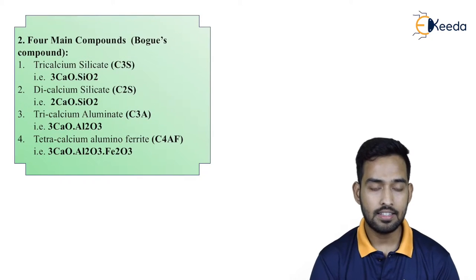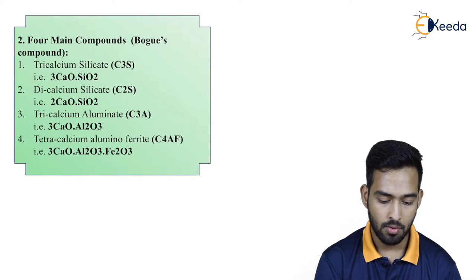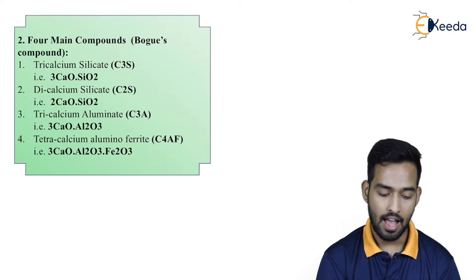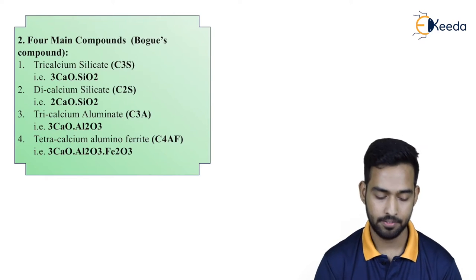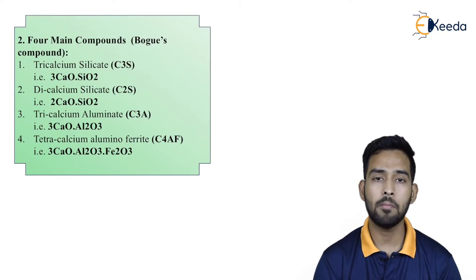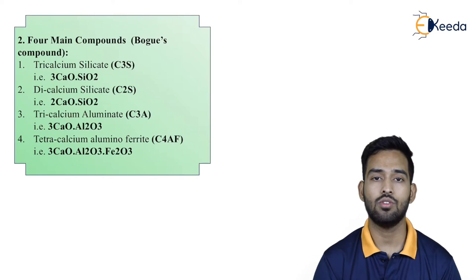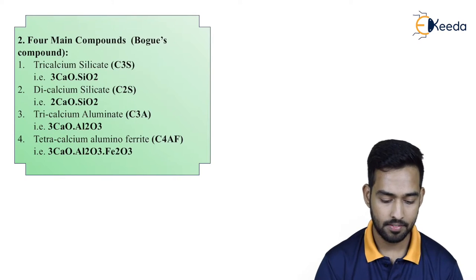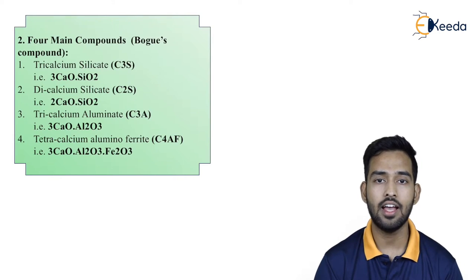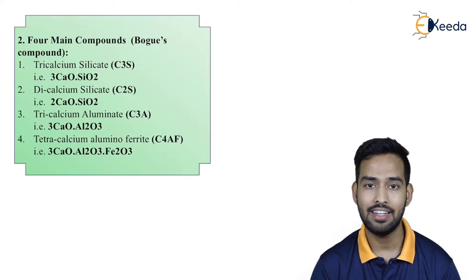Let us discuss about the 4 main compounds, also known as the Bogue compounds. These are very important and their properties we should understand before using cement. The first compound is tricalcium silicate, also known as C3S, that is 3CaO·SiO₂. Remember: tricalcium silicate, C3S.